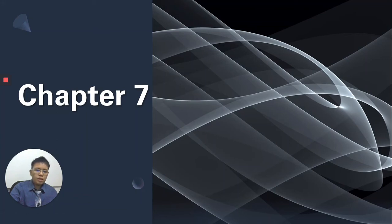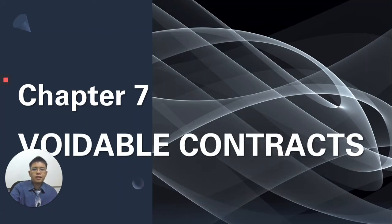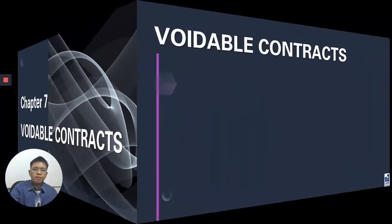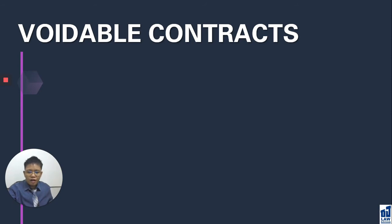Hello class, today's topic is Chapter 7, Avoidable Contracts. Let's begin with the definition of avoidable contracts. Remember, we already discussed this in passing when we discussed the introduction to defective contracts.